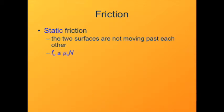Static friction is the force of friction that's present when the two surfaces are in contact and they're not moving relative to each other — in other words, they're moving together or they're both still. In that case, we can say that the force of friction is less than or equal to the static coefficient of friction times the normal force. This formula for static friction gives a maximum value; it can be any magnitude up to that value.